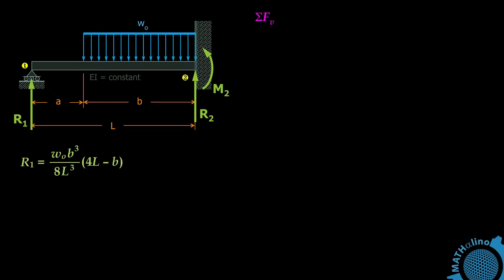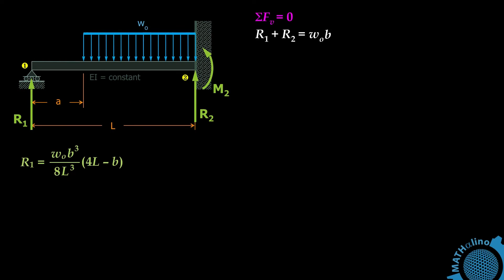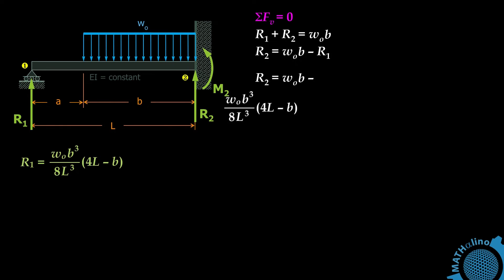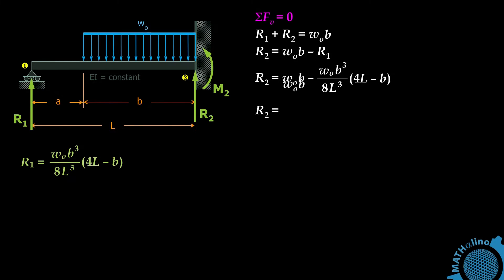From the summation of forces in the vertical direction equal to zero: upward forces R1 and R2 equal downward force WO times B. Rearranging and substituting R1, then factoring WO times B over 8L cubed, we obtain the value of R2.